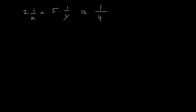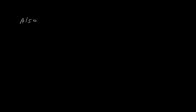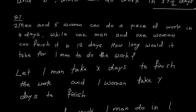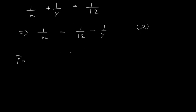The second condition: 1 man and 1 woman can finish it in 12 days, so 1/x + 1/y = 1/12. From this I can say 1/x = 1/12 − 1/y. Consider this as equation 2. I will use the substitution method — you can also use 1/x = a and 1/y = b to frame linear equations.